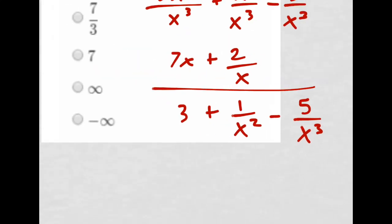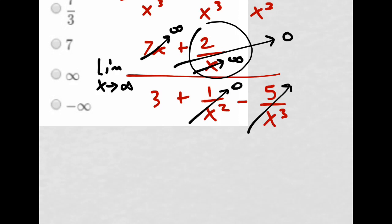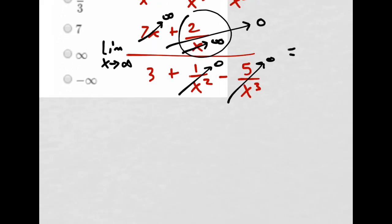Now we can evaluate this as the limit as x approaches infinity. The 7x goes to infinity. These terms with x in the denominator—when the denominator goes super large, the whole thing goes to 0. Both of those go to 0, so I'm left with infinity over 3.